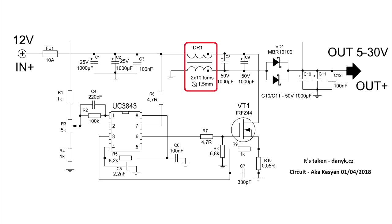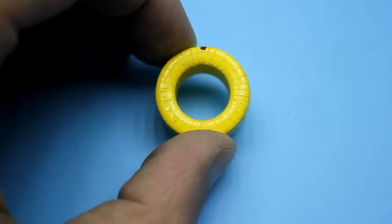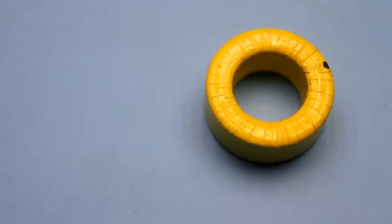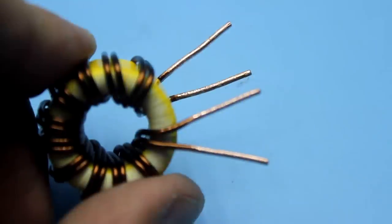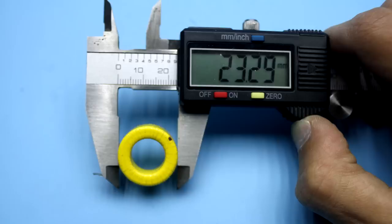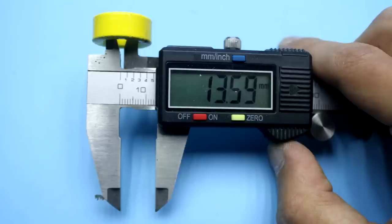The transformer, or to say precisely, the choke, is wound on a yellow and white ring made of powdered iron. They are used at the output filter in computer power supplies. The size of the core which I used is now in front of you.